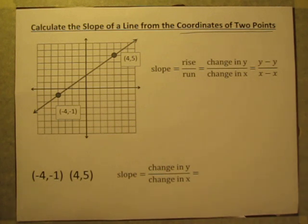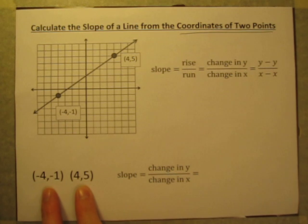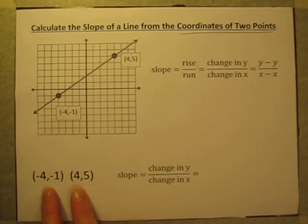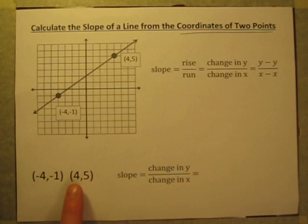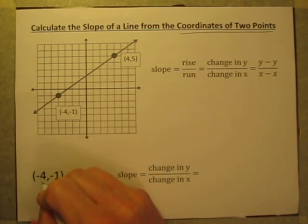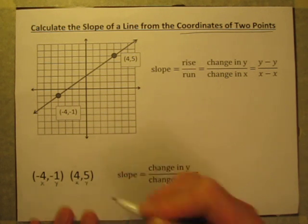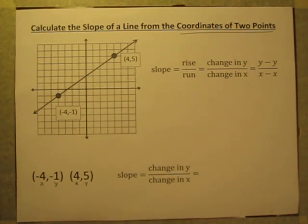You could, but you don't need to. So let's say you're given a problem, and the problem says you have the coordinates of two points on a line: negative four, one, and four, five. There are x coordinates and y coordinates — an x and a y. And you want to figure out what is the slope of the line.